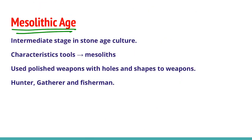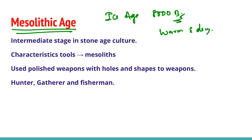The Upper Paleolithic age came to an end with the end of the Ice Age around 10,000 to 8,000 BC, and the climate became warm and dry. The climatic changes brought about changes in fauna and flora and made it possible for human beings to move to new areas. There were no major changes in the climatic conditions after this transition.